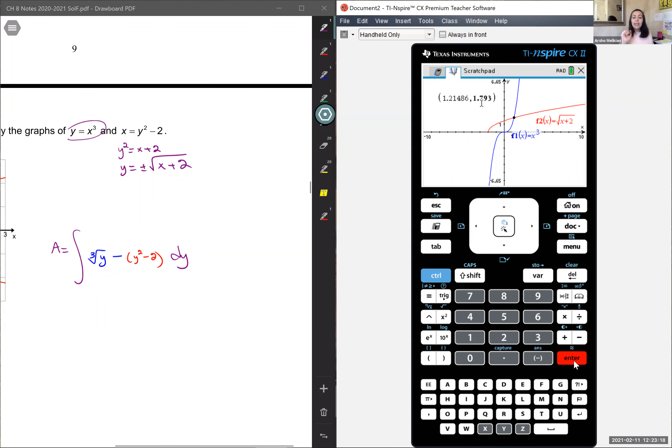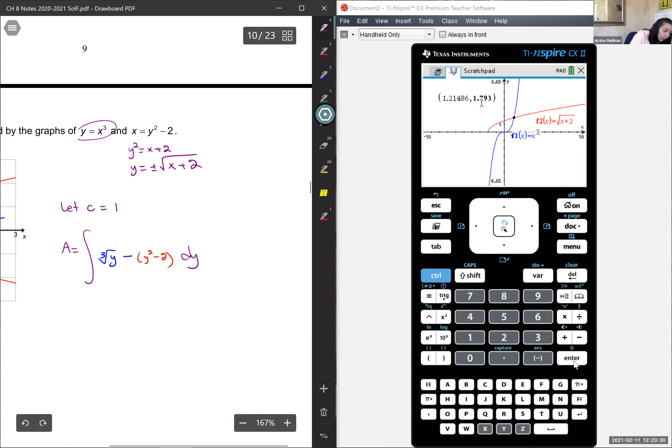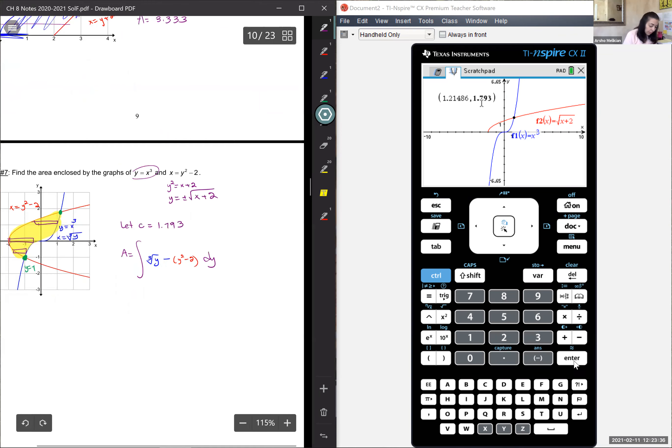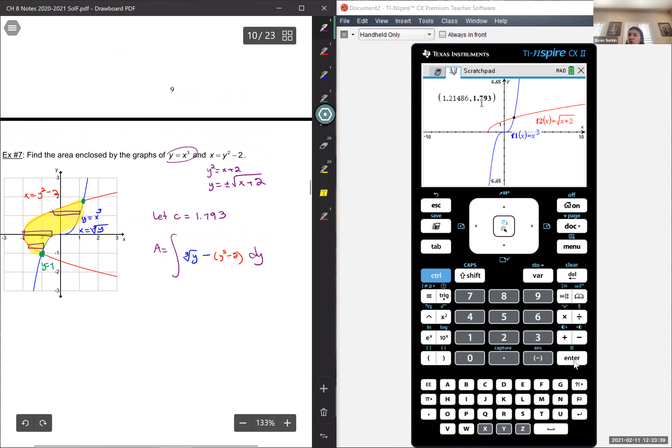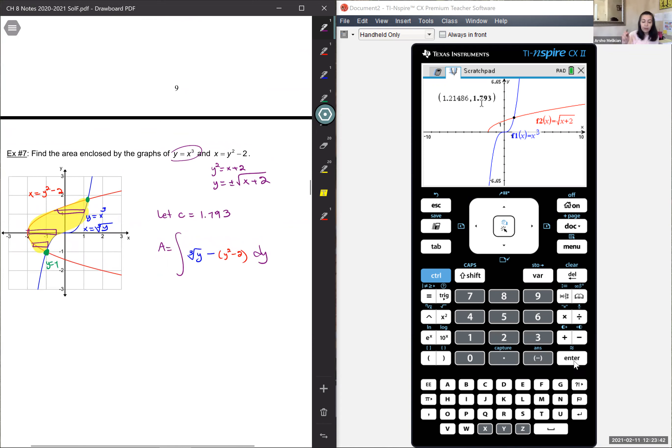Now, all this is meaningless if on your paper, you don't write what your variable equals. So you have to say let C equal 1.793. So now my integral is again control variable. What's the button? You said control. It's the button right above the nine. So my integral is going to go from negative one to C. So now I go home. I mean, I don't go home. I go to my home screen.